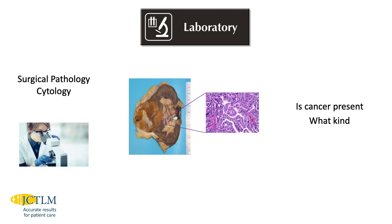Surgical pathology or cytology is a branch of laboratory medicine that examines tissues and performs microscopic examination of the cellular structure of those tissues, generally to determine if cancer is present and if so, what type of cancer. For example, a patient might have an elevated prostate specific antigen measured in the chemistry laboratory, followed up by a biopsy of the prostate gland to determine if any cancerous cells are present.